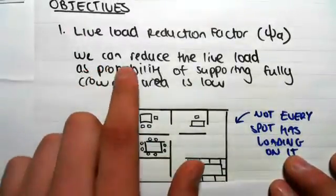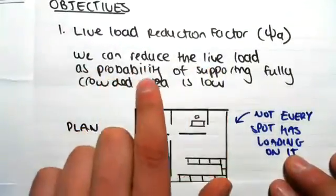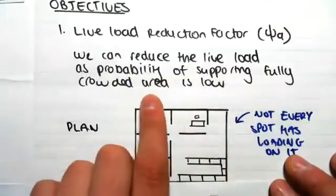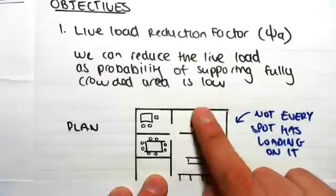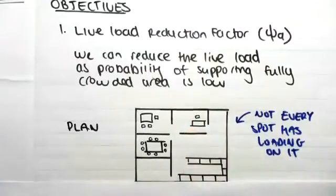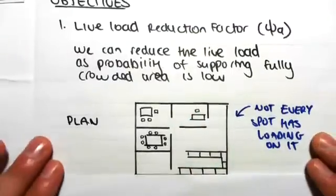So what we can do is we can reduce the live load as the probability of supporting a fully crowded area is low. All this is saying is that because not every spot is actually going to be loaded with, say, a 3 kPa live load, we can artificially reduce this live load.